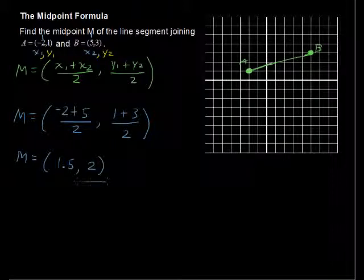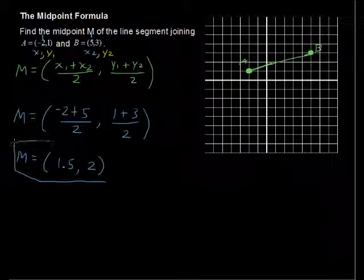So, our coordinates are 1.5, 2, right here. Here's our midpoint, and it looked like the middle on our sketch over there, and then numerically, or algebraically, we found that to be the midpoint, the coordinates of the midpoint.